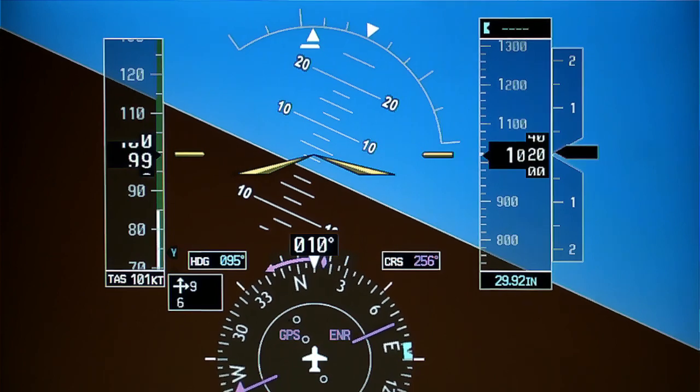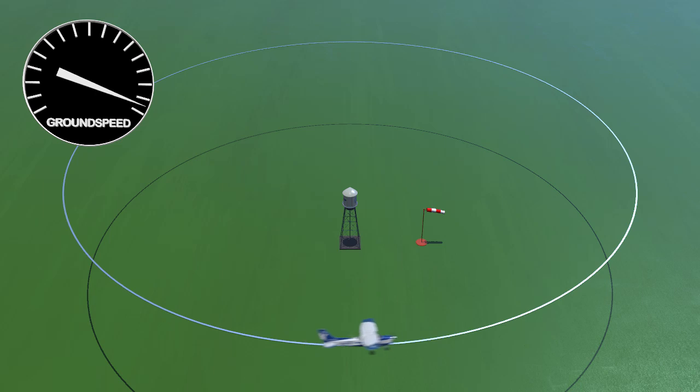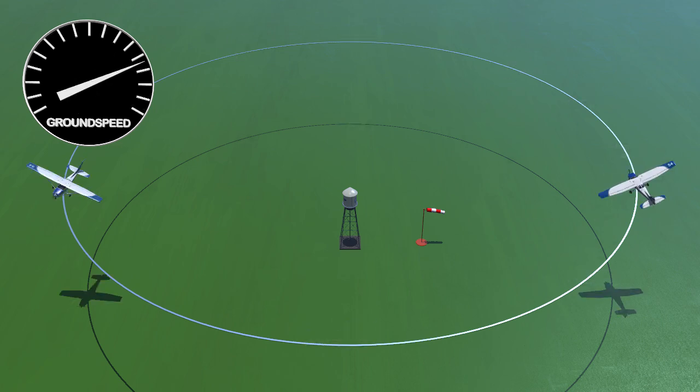While performing turns around a point, it is important that you maintain a constant indicated airspeed. This will allow you to better anticipate the changes in your ground speed as the airplane transitions between tailwinds, headwinds, and crosswinds.